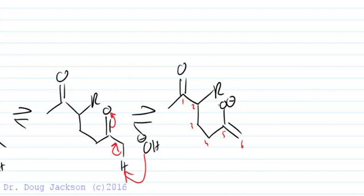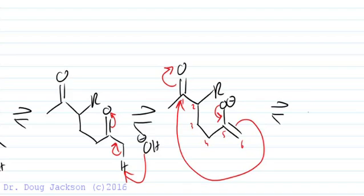When we collapse the enolate, we attack alpha carbon, intramolecular aldol, kicks up to the O- here. Here's where we've got to be careful.